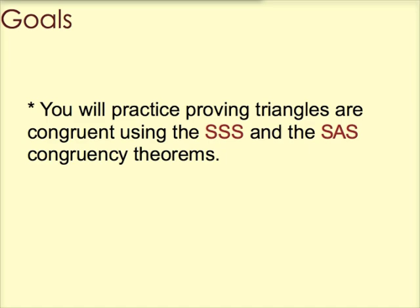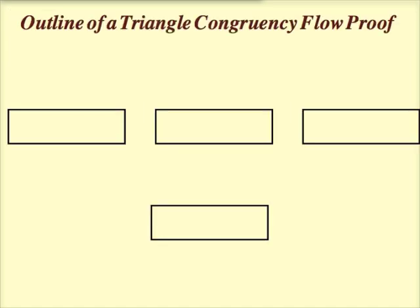Every triangle congruence theorem proof is going to follow the same kind of general theme, or the same general format. We have three boxes, and all of these three boxes together lead us to the third box. Sorry, the fourth box. So these three boxes, let's call them box 1, 2, and 3, they all funnel into box number 4. And here's why.